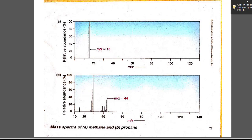Here we have two actual mass spectra — the top one for the simple molecule methane and the bottom for propane. For methane, the molecular ion is also the base peak, appearing at M/Z = 16. Since Z equals 1, the molecule lost one electron, giving an atomic mass of 16, which of course corresponds to the molar mass of methane. This is the unfragmented ion.